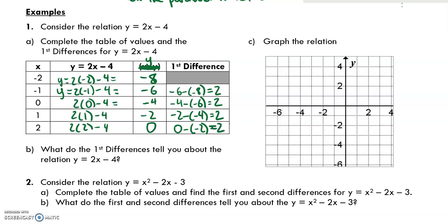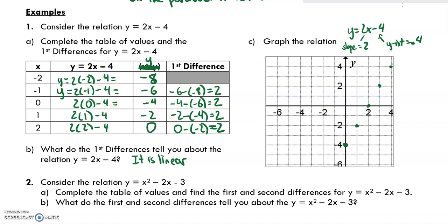What do the first differences tell you about the relation? It tells us — and we knew this because we recognized it was in y equals mx plus b form — that it must be linear, because the first differences are constant. If we were to graph this relation, y equals mx plus b: the y-intercept is negative 4, and the slope is 2. We start at negative 4 on the y-axis, then go up 2 over 1 repeatedly to draw the line. That's y equals 2x minus 4, a linear relationship.